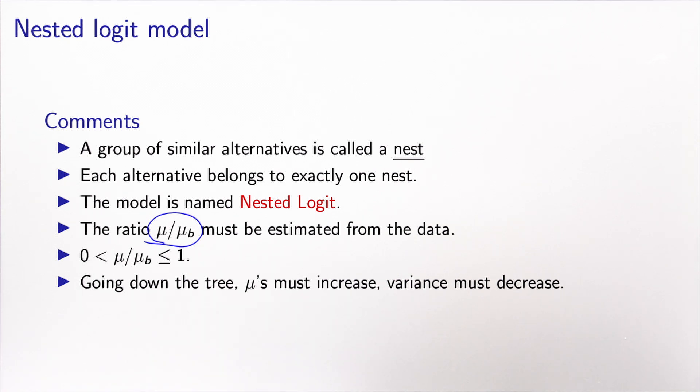This quantity should lie between 0 and 1. In terms of interpretation, going down the tree, the mu's must increase. Since mu is the scale parameter of the error term distribution, increasing mu means the variance must decrease. Now let's write the equations for the general model — we've seen the derivation using the red bus and blue bus example, so let's generalize.